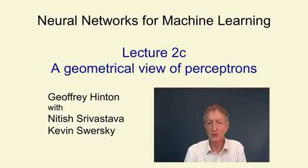In this video, we're going to get a geometrical understanding of what happens when a perceptron learns. To do this, we have to think in terms of a weight space. It's a high-dimensional space in which each point corresponds to a particular setting for all the weights. In this space, we can represent the training cases as planes, and learning consists of trying to get the weight vector on the right side of all the training planes.